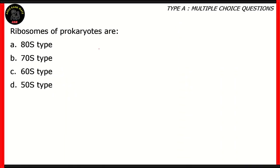Now let's look at the next question. Ribosomes of prokaryotes are 80s type, 70s type, 60s type, 50s type. Now remember we're talking about prokaryotes here. Prokaryotes are the primitive organisms such as monora, like bacteria and archaea. So those are prokaryotes.